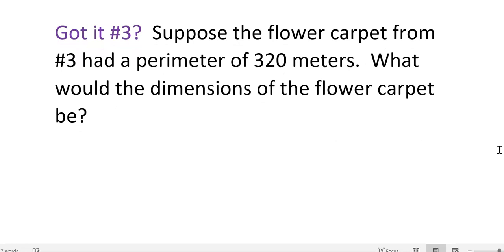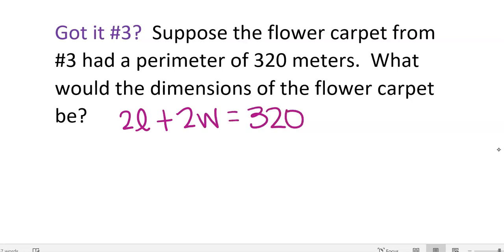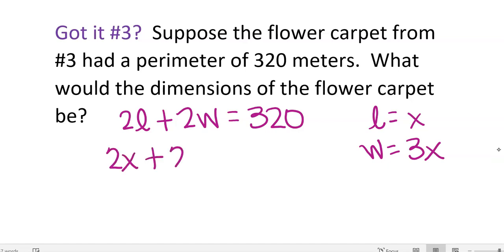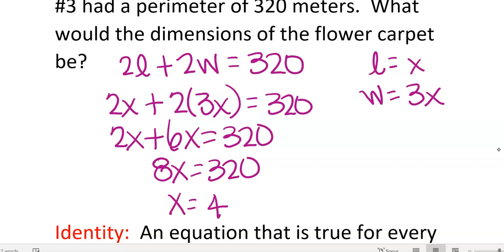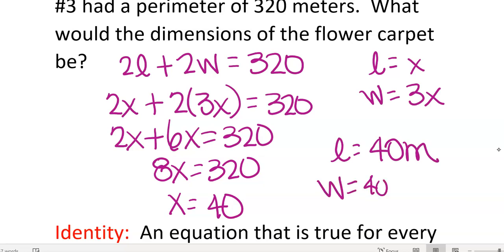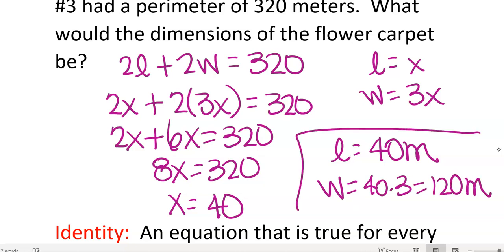You can pause the video and try 'got it' question number 3 and check your answer when done. Suppose the flower carpet had a perimeter of 320 meters — what would the dimensions be? Two times the length plus two times the width equals 320. With length equals x and width equals 3x: 2x plus 6x equals 320, so 8x equals 320. Divide by 8: x equals 40. Length equals 40 meters and width equals 3 times 40 equals 120 meters.